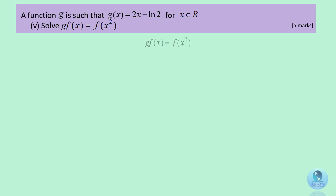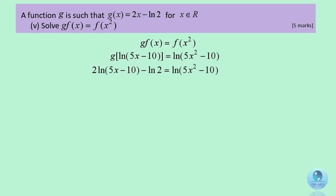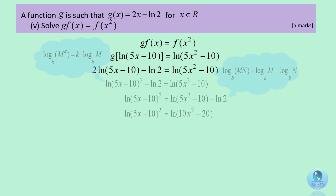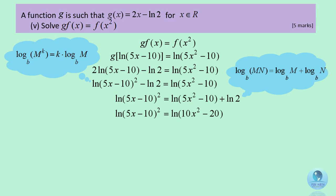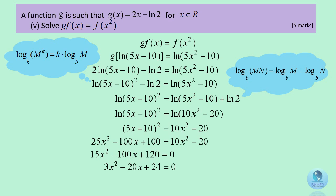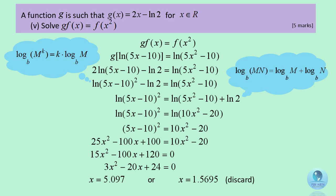For g(f(x)) equals f(x) squared, expand the equation and by using the rules of logarithm we get the natural log of (5x minus 10) squared equals the natural log of (10x squared minus 20). Removing the natural log gives the quadratic equation 3x squared minus 20x plus 24 equals 0. Finding the roots, we only take x equals 5.097.